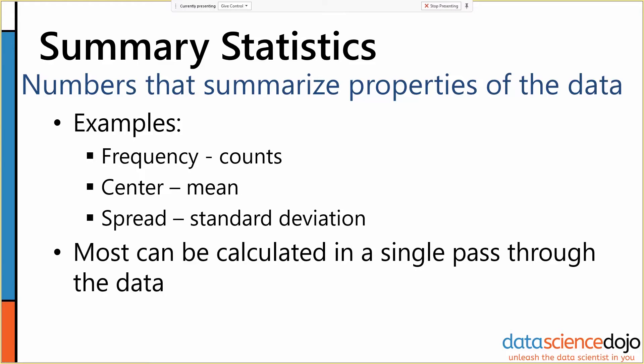Summary statistics are numbers that summarize properties of the data — exactly what they sound like. Most can be calculated pretty quickly in a single pass through the data, which is very nice. Most of them can be calculated in just about any language you care to use, whether you're doing it in SQL, R, Python, or anything else. Summary statistics are pretty easy to calculate.